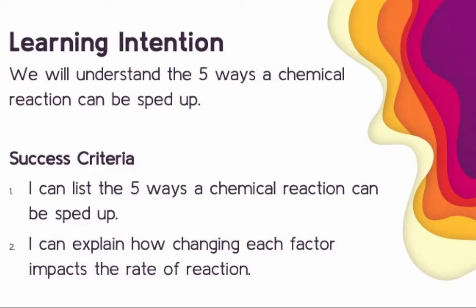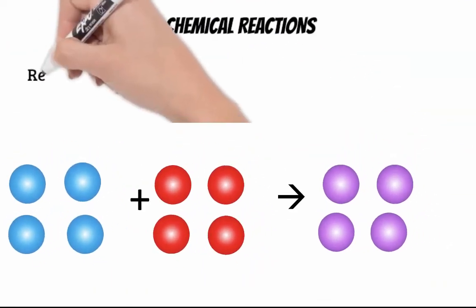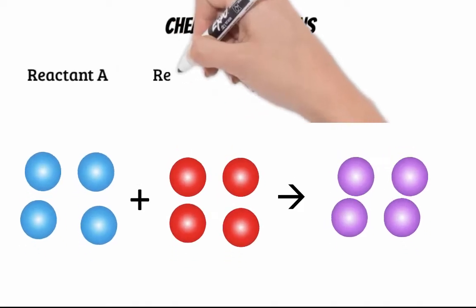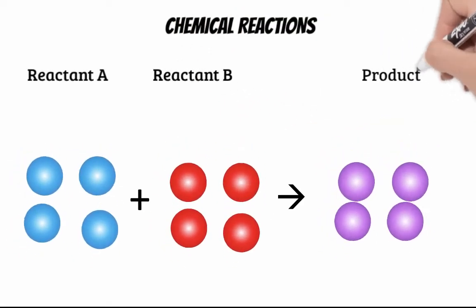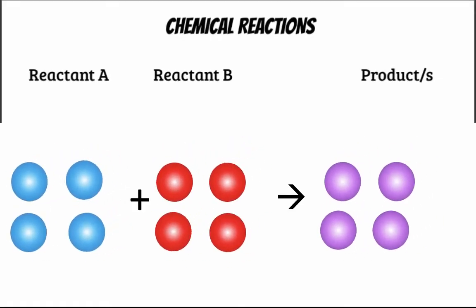A chemical reaction is where multiple substances are transformed into new substances. This means their actual chemical structure at a molecular level has changed. The substances going into the reaction are called the reactants, while the new substances created are called the products.